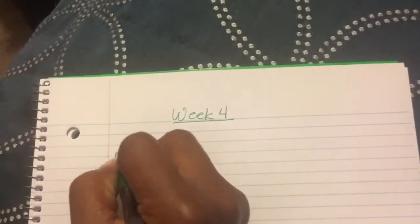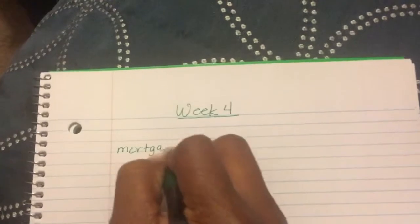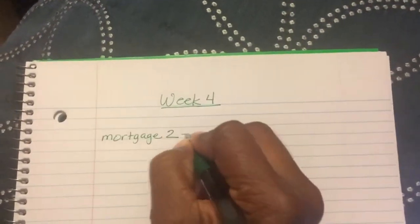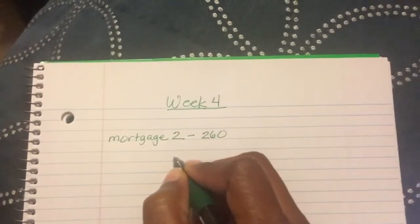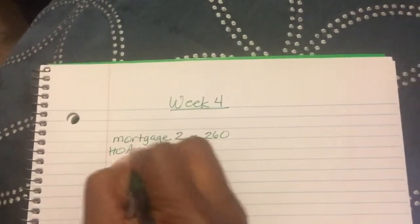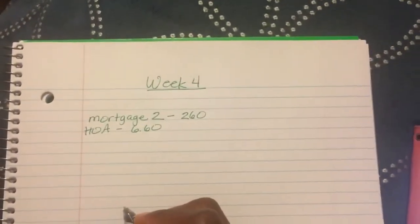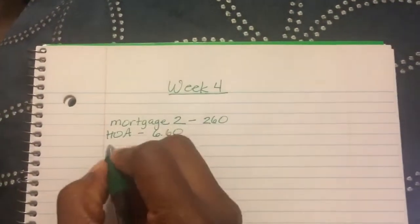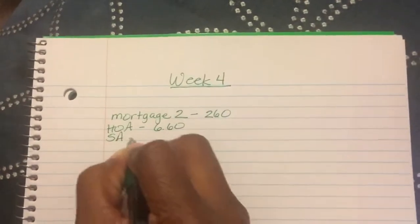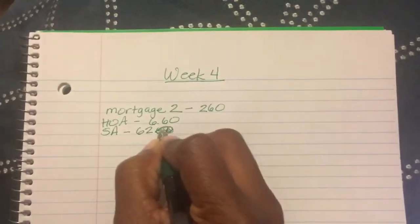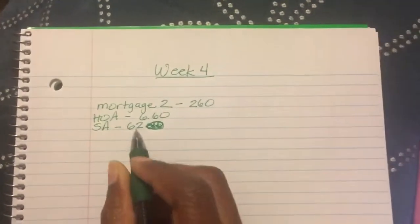This week's bills are mortgage number two, which is $260. We have the HOA fees for $6.60. We have the South Africa trip for $62. Still a little bit sleepy, I guess.